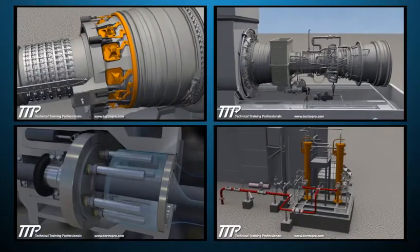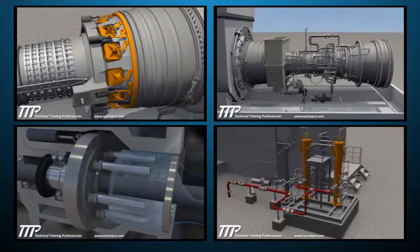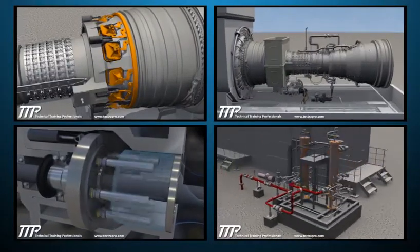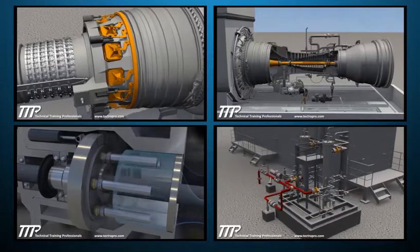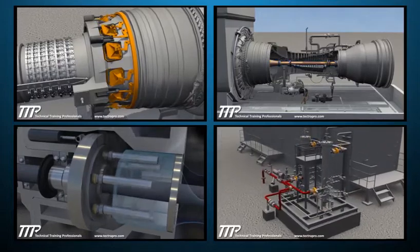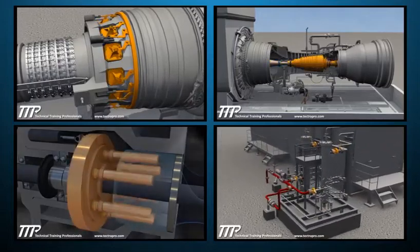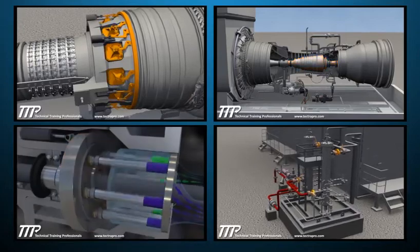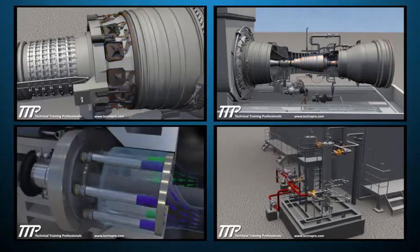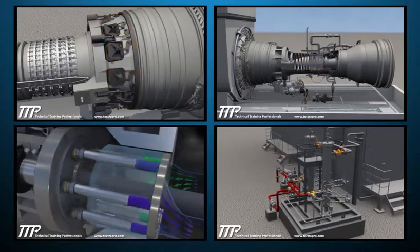The TTP LM6000 gas turbine course covers design, flow paths, function, and operation of the different sections of the dual-shaft aeroderivative gas turbine and generator.